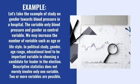5. Example. Let's take the example of study on gender towards blood pressure in a hospital. The variable only blood pressure and gender is control variable. We may increase the number of variables such as age or lifestyle. In political study, gender, age range, educational level to be important variable in choosing a candidate for a leader in the election. Descriptive statistics does not merely involve only one variable. Two or more variables are possible. Essentially, the conclusions only cover the sample size.